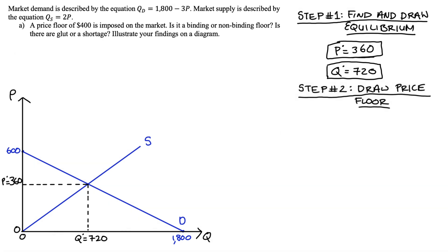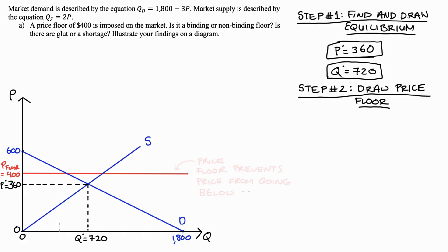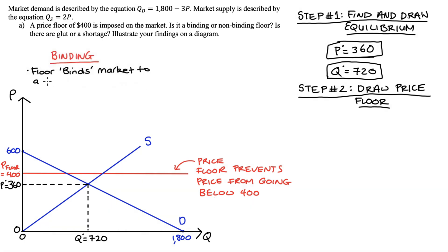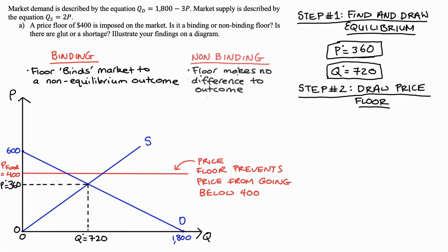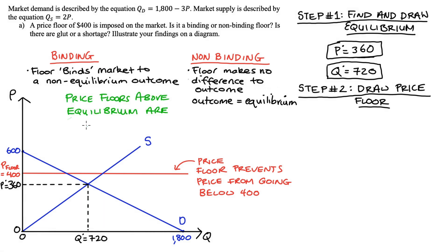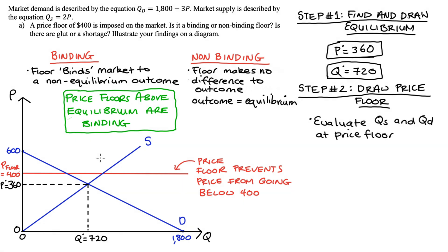Now step two is to impose the price floor on this market. The price floor of 400 lies above our market equilibrium price of 360, so it sits above the equilibrium. The price floor prevents the price from going below 400. A binding price floor is one that makes a difference to the market — it binds the market to a non-equilibrium outcome. Let's evaluate what's happening in the market at the price floor of 400.